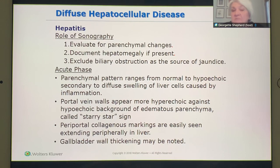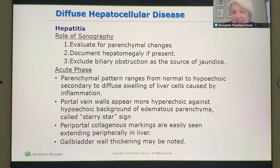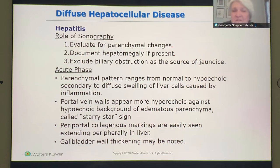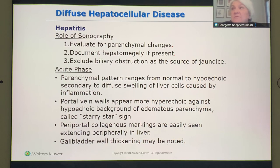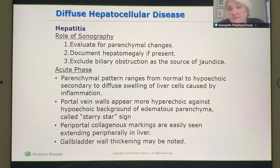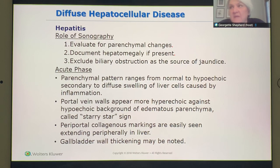The portal veins are going to be very hypoechoic, giving it the starry sky sign — that's because of the fluid inside the liver. The liver is enlarged and adenomous; that's how you describe it — adenomous, it looks fluffy. It's going to be hypoechoic and the portal veins are going to be very, very visible. With hepatitis, the gallbladder wall will be thick, and a thick gallbladder wall is greater than three millimeters.